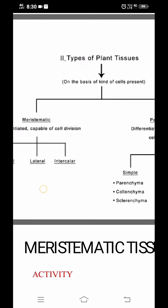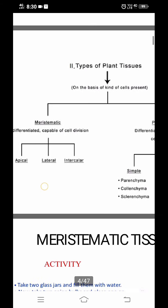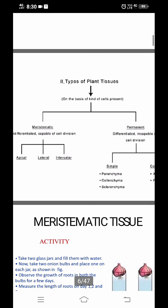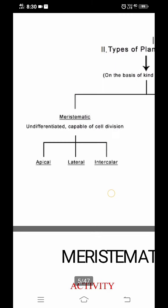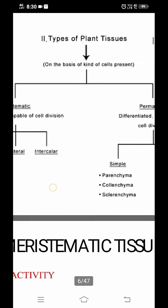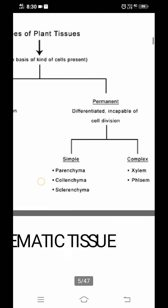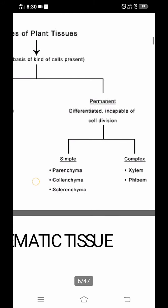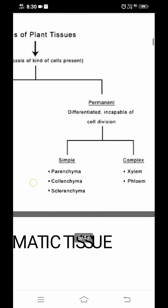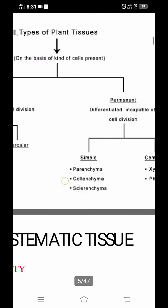Plant tissue is classified based on the kind of cells that are present. It is divided into meristematic and permanent tissue. Meristematic tissue is undifferentiated and capable of cell division — they keep on dividing. Permanent tissue is differentiated and incapable of cell division; it has already differentiated and doesn't need to divide anymore.